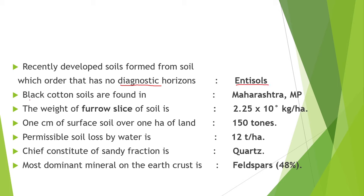Next point is, black cotton soil is found in Maharashtra and black cotton soil is best suited for cotton cultivation. Next point is, the weight of furrow slice of soil is 2.25 × 10⁶ kg per hectare. The 1 cm of surface soil over 1 hectare of land is 150 tons.